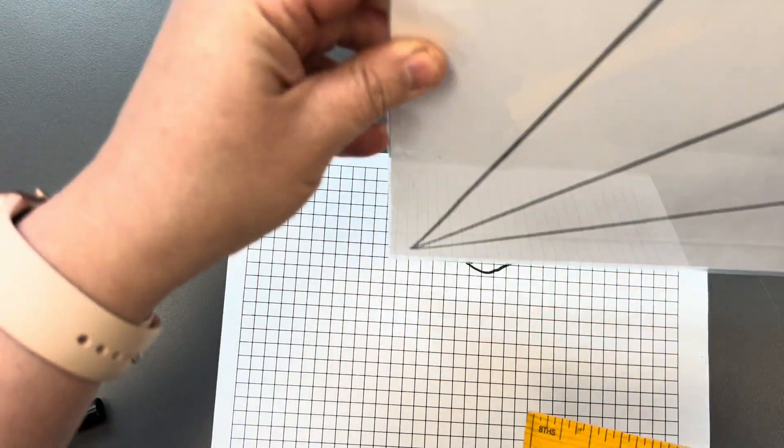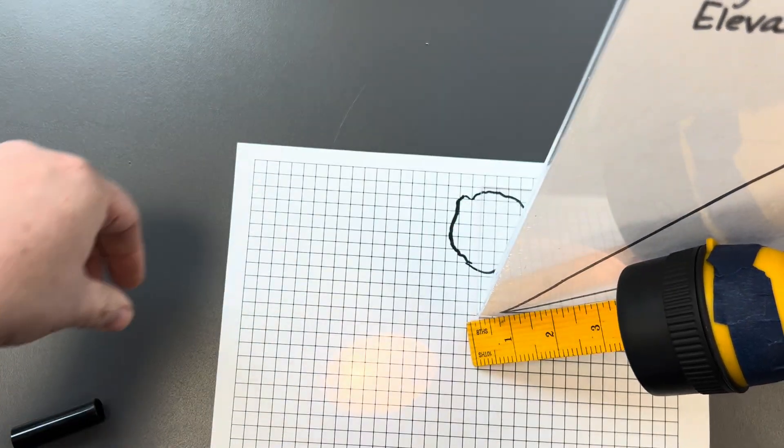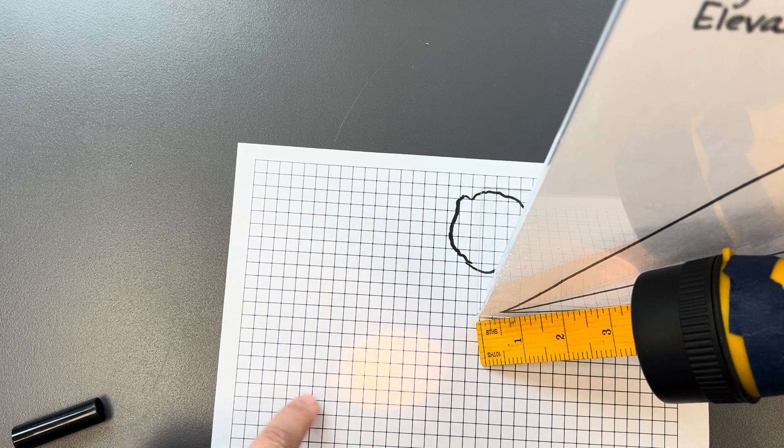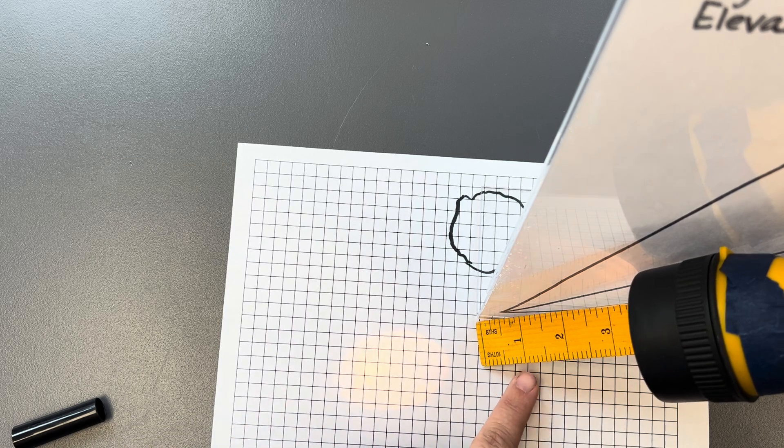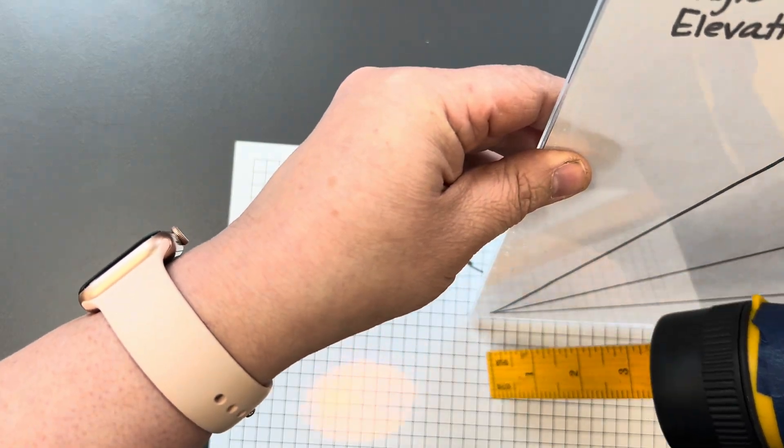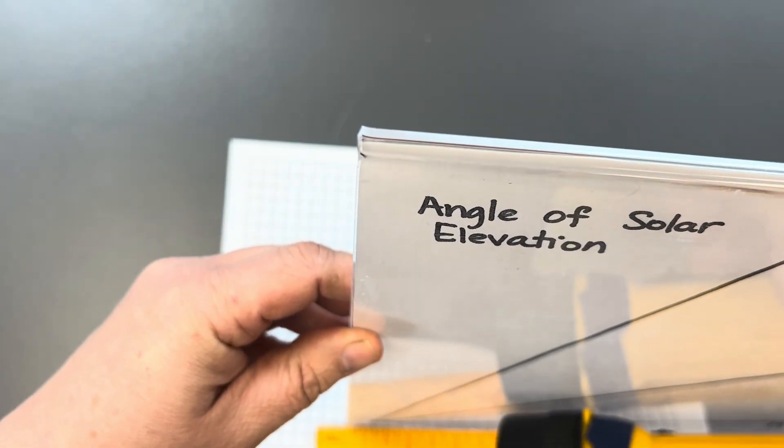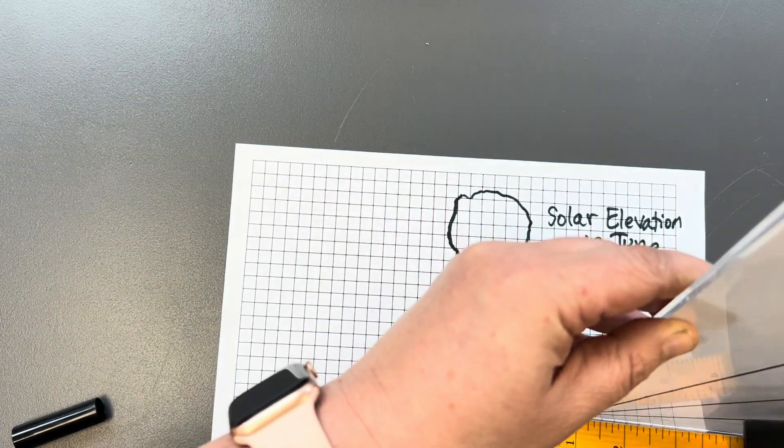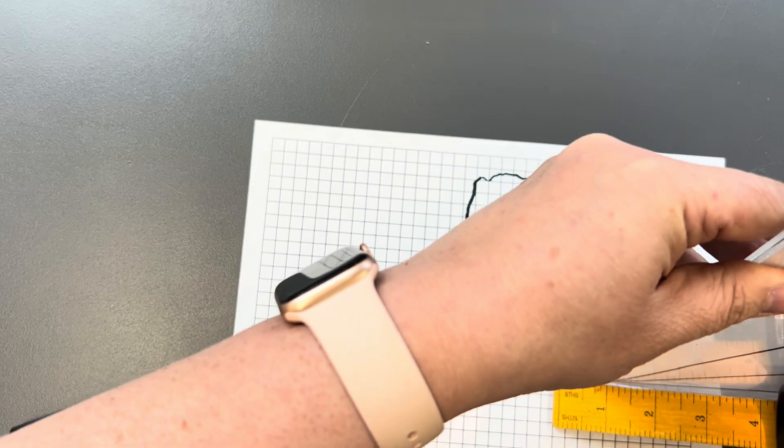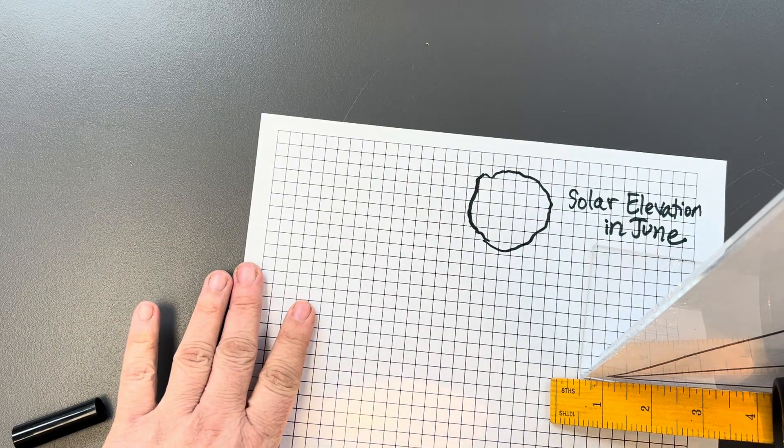Okay, and then we're going to do it for our fall and spring. Okay, so I would hold it there. I'm going to trace around the outline of this light, and then call this solar elevation in March and September, or solar elevation in spring and fall. Then I would move it again, and I'm going to hold it now consistent with the lowest angle on my paper. You're going to want to kind of shift it around so that you can get the entire circle of light onto your graph paper.